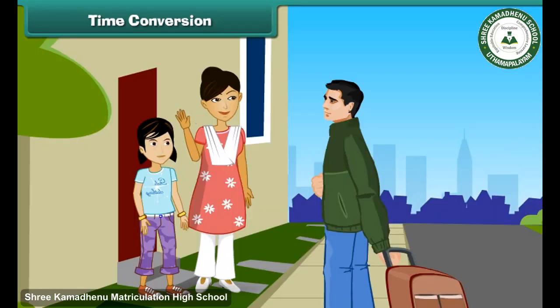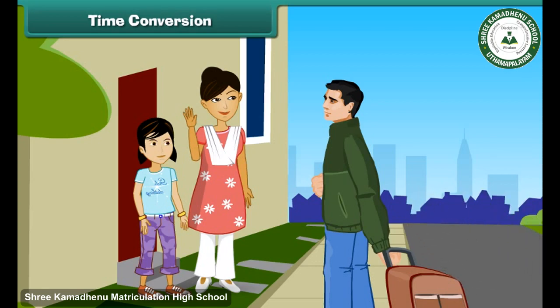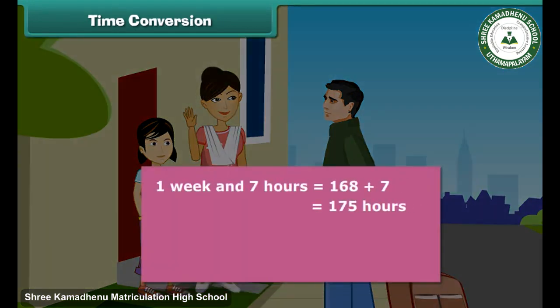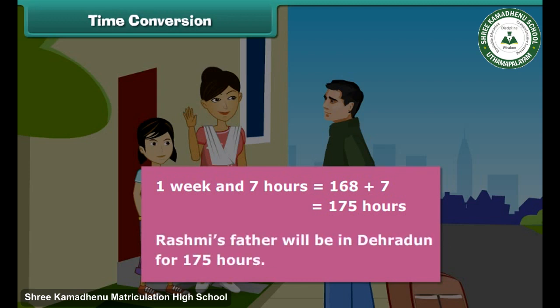Rashmi's father has left for Dehradun. He will be there for a week and 7 hours. Express his stay in Dehradun in hours. 1 week equals 7 days. 1 day equals 24 hours. 7 days equals 24 multiplied by 7, which equals 168 hours. 1 week and 7 hours equals 168 plus 7, which equals 175 hours. Therefore, Rashmi's father will be in Dehradun for 175 hours.